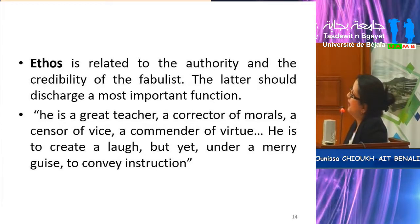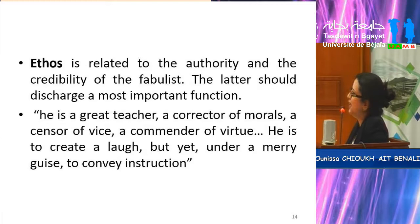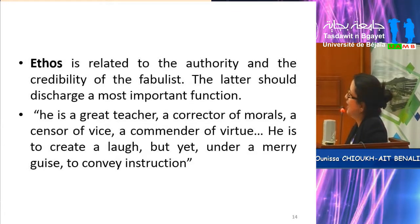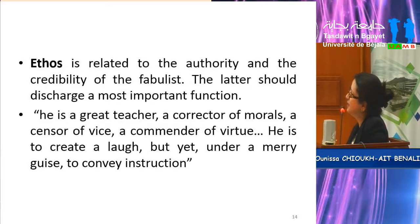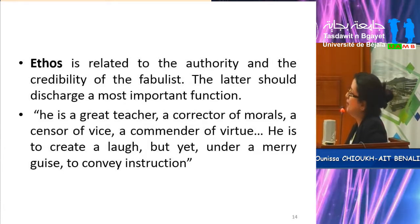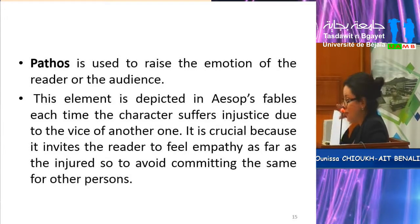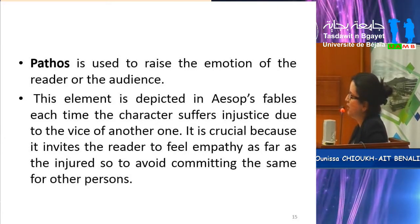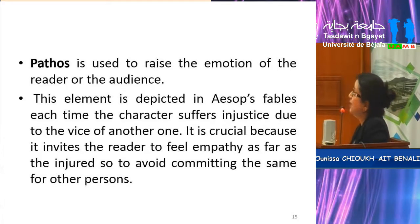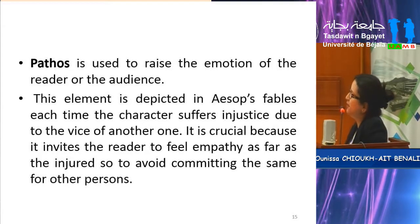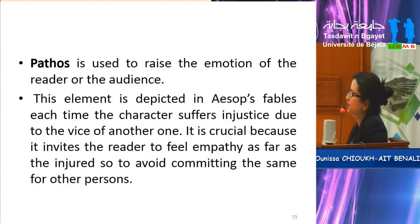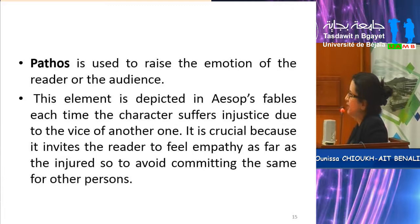Ethos is related to the authority and credibility of the fabulist — the teacher. According to George Townsend, the fabulist is a great teacher, a corrector of morals, a censor of vice, a commander of virtue; he is to create laughter, but under a merry guise to convey instruction. Pathos, the third element of persuasion, is used to raise the emotion of the reader or audience. It is depicted in Aesop's fables each time a character suffers injustice due to the vice of another. It is crucial because it invites the reader to feel empathy and to avoid committing the same wrong toward others.